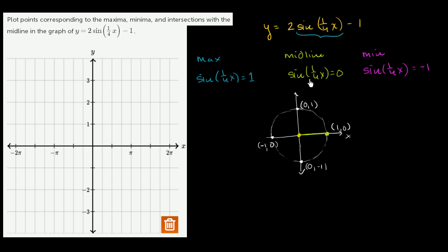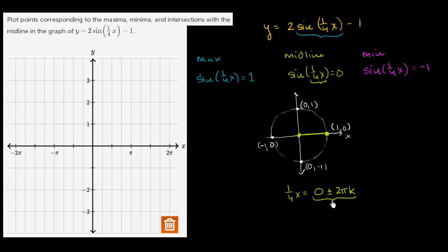So when is sine of 1/4 x equal to 0? That happens whenever 1/4 x equals 0 plus or minus 2πk for some integer k. To solve for x, we multiply both sides by 4, giving x equals 0 plus or minus 8πk. This encapsulates x = 0, ±8π, ±16π, and so on.